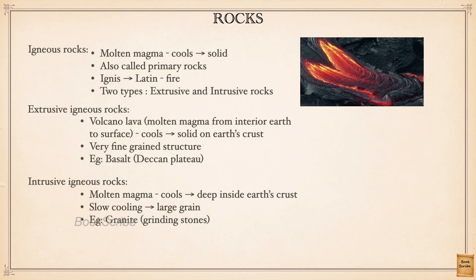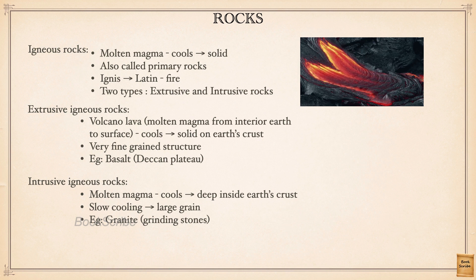When molten magma cools — magma is nothing but liquid rock, as in high temperatures rocks will be in liquid form — it becomes solid and forms rocks. Such rocks are called igneous rocks. They are also called primary rocks because they are the first type of rocks, and other types of rocks form only after these. The word igneous comes from the Latin word 'ignis', meaning fire — these rocks are formed because of fire.